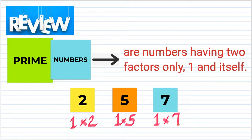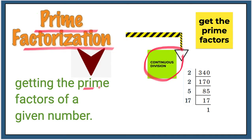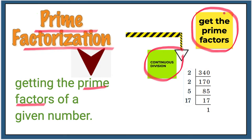So again, do not forget that when we say prime numbers, they have only two factors: one and the number itself. That concept has something to do with prime factorization using continuous division. When we say prime factorization, it is the process of getting the prime factors of a given number. Our objective for today is to get the prime factors of a given number using this continuous division method.